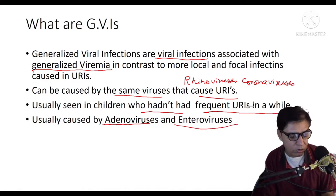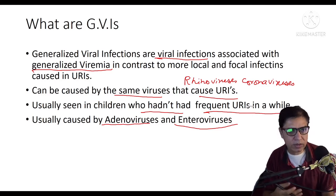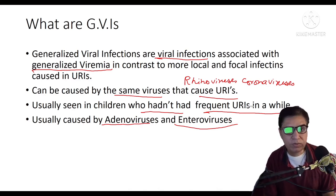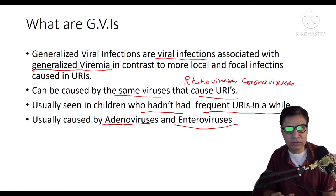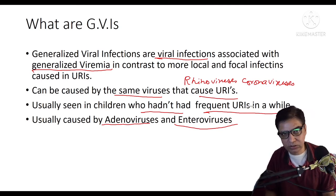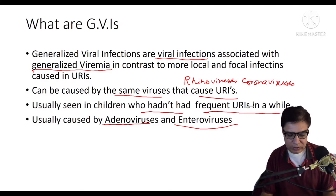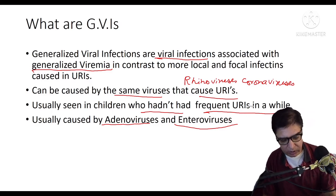Generalized viral infections can be caused by rhinoviruses or coronaviruses, but virological studies show that most of the time these are adenoviruses or enteroviruses. They are called enteroviruses because the mode of entry is through the intestinal epithelium — they go inside and reach the blood directly. So this covers the definition of generalized viral infections.